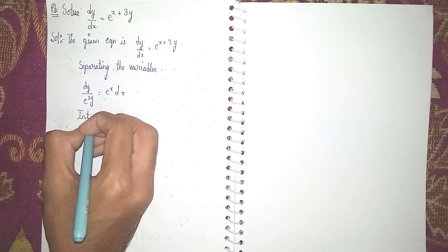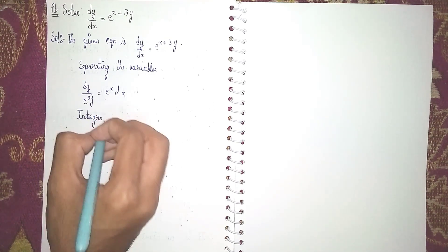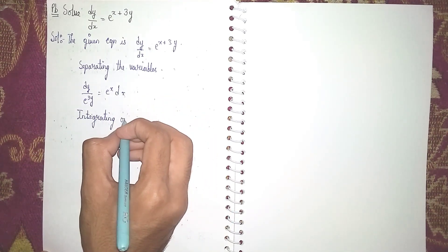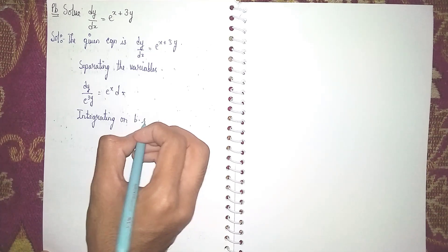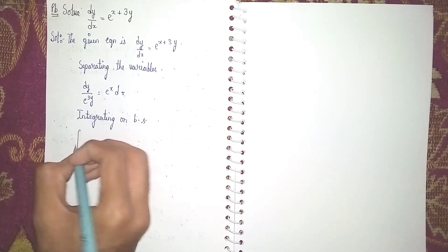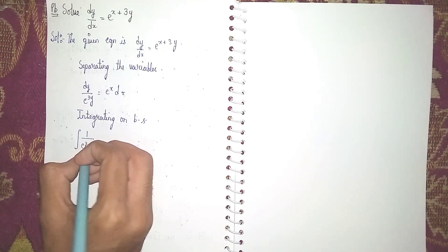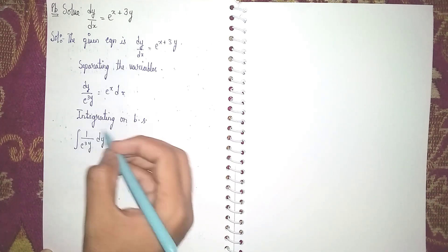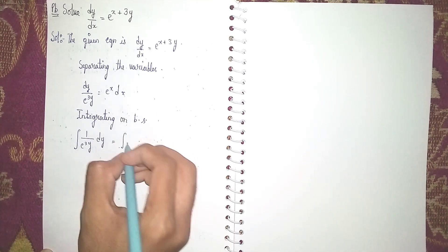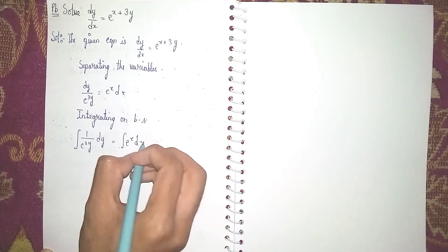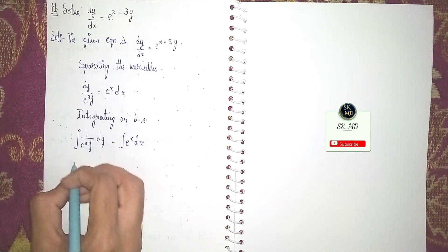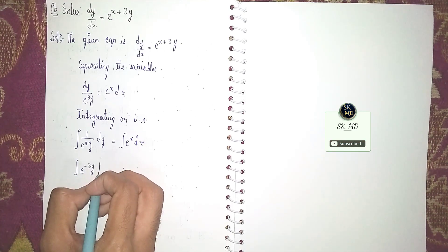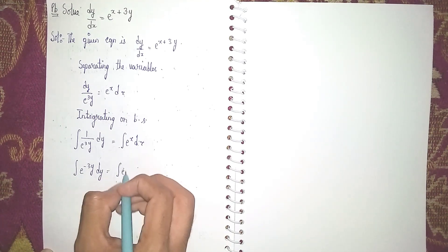Now integrating on both sides. Integrating the left side: integrate (1/e^(3y)) dy, which we can write as integrate e^(-3y) dy. On the right side: integrate e^x dx.